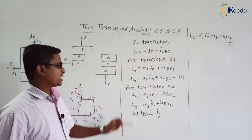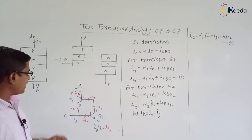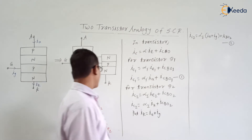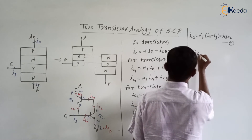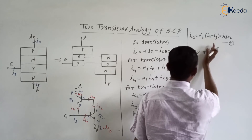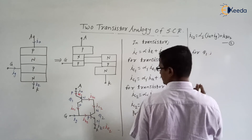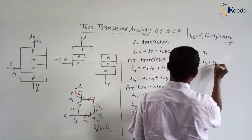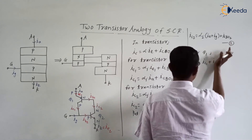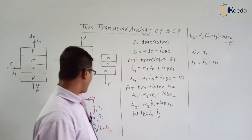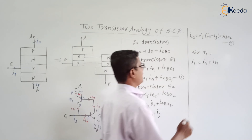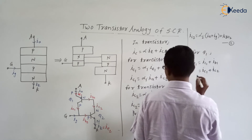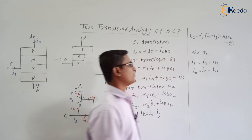Now we have expressions for IC1 and IC2. For any transistor, emitter current equals base current plus collector current. For Q1, IE1 = IC1 + IB1. Since IB1 = IC2, we can write IE1 = IC1 + IC2. Since IE1 = IA, we get IA = IC1 + IC2.